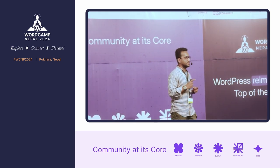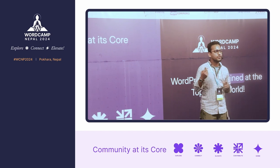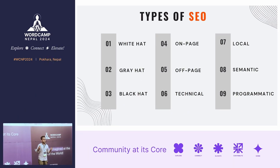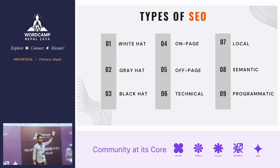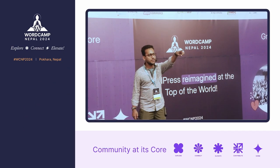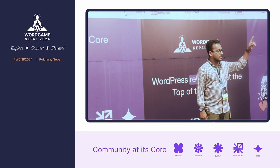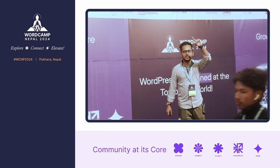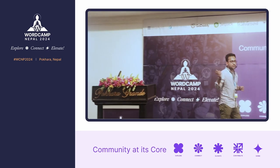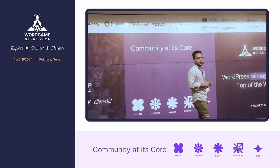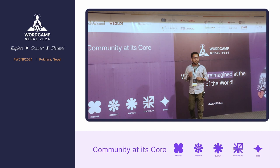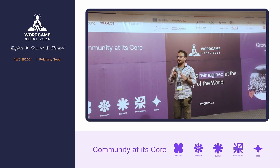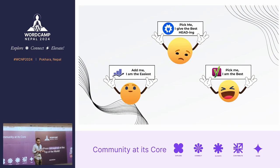Now, what are the types of SEO? Is it white hat, gray hat, and black hat? Wrong. On-page, off-page, and technical? Also wrong. Local, semantic, and programmatic? Still wrong. The ultimate answer is that SEO types are based on context — it depends on what you will do.